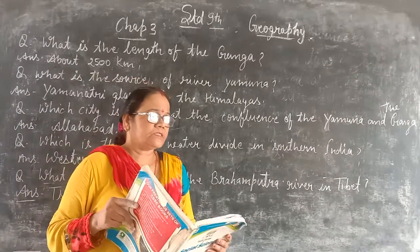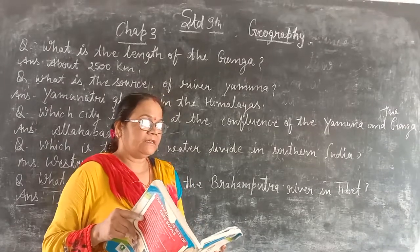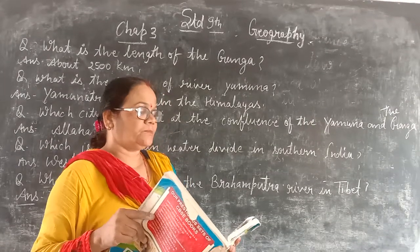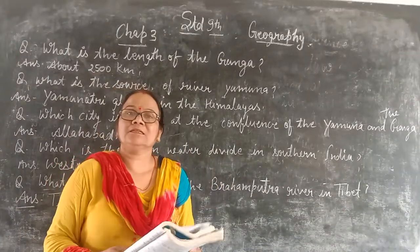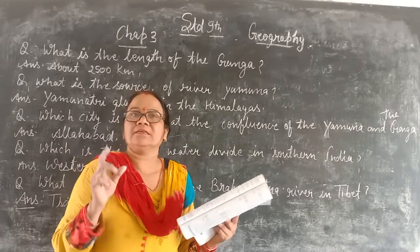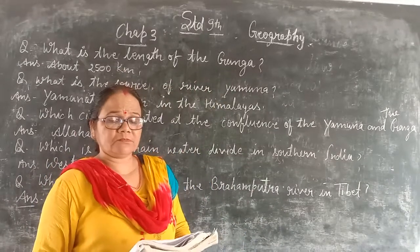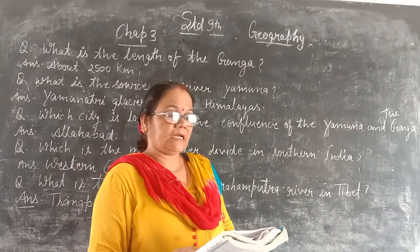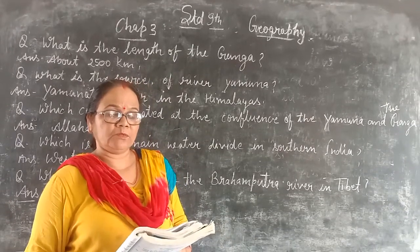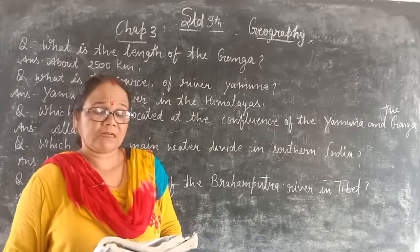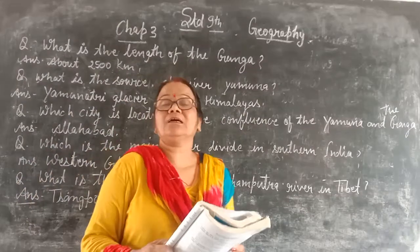The next question is: what is the main watershed in Peninsular India? The major rivers of Peninsular India are the Mahanadi, the Godavari, the Krishna, and the Kaveri. Name two large rivers of India which flow into the Arabian Sea.